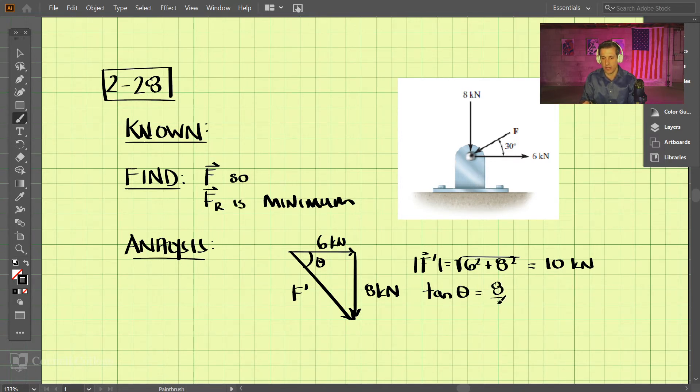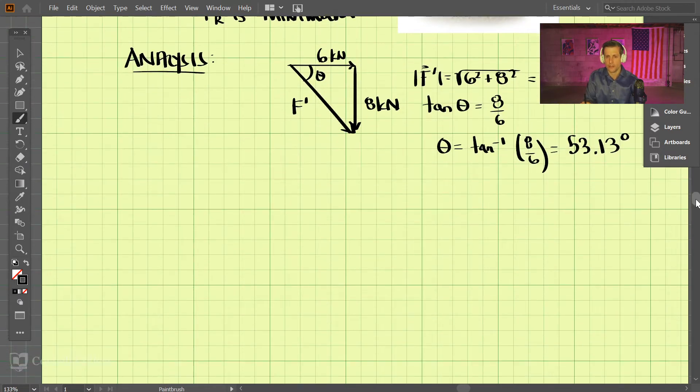If we take the inverse tangent of that, we have theta equals the inverse tangent of 8 over 6, which comes out to be 53.13 degrees. So that's that angle.